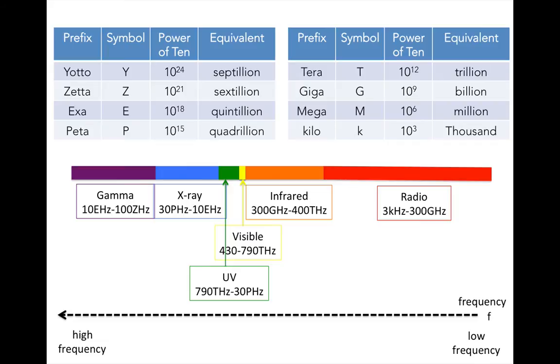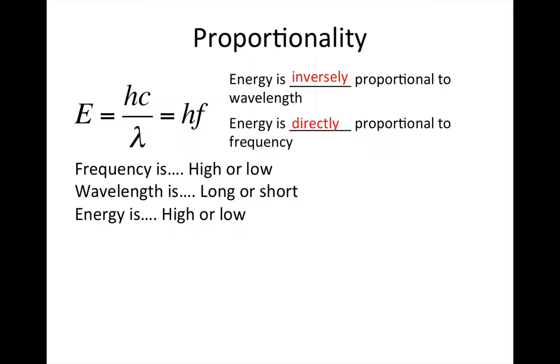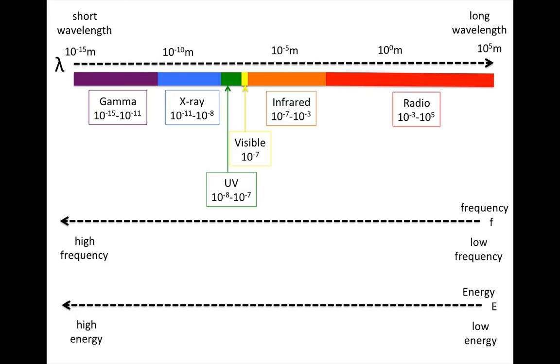As you'll recall from the last lecture, the energy of light is inversely proportional to the wavelength, and directly proportional to the frequency. So energy increases in the same way that frequency does, from radio to gamma. The highest energy forms of light have 10 million trillion times more energy than the lowest energy forms. Let's put all three of these measurements together: wavelength, frequency, and energy.